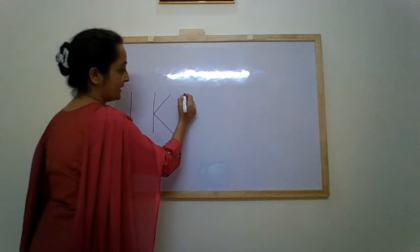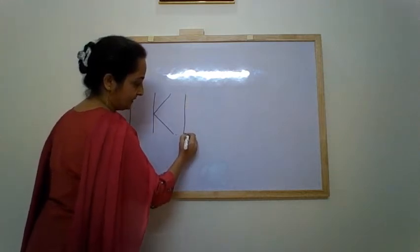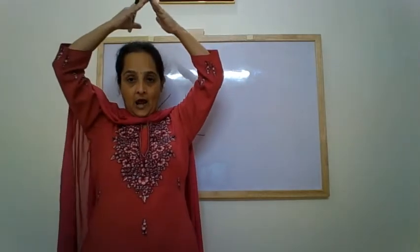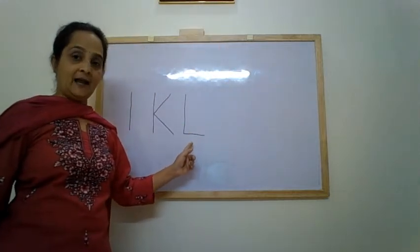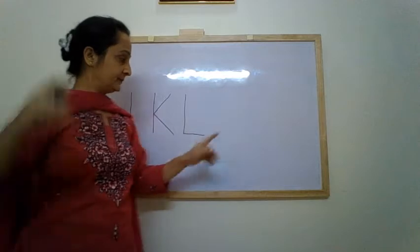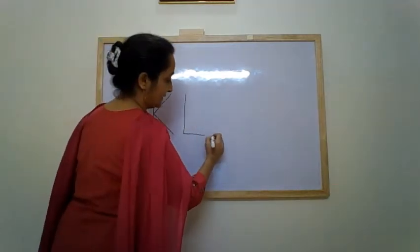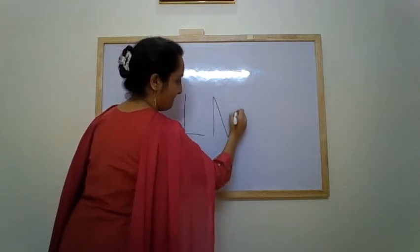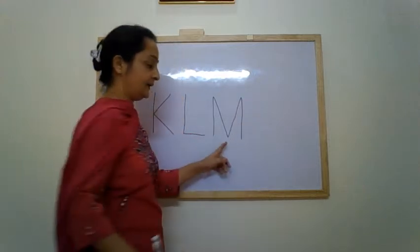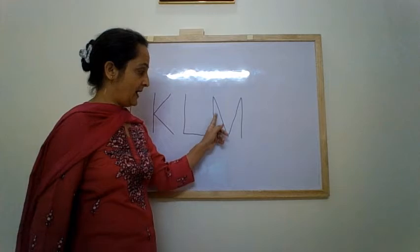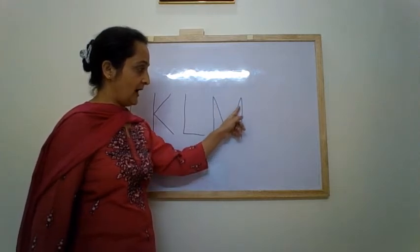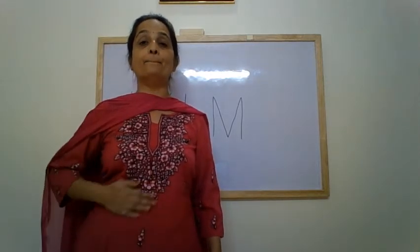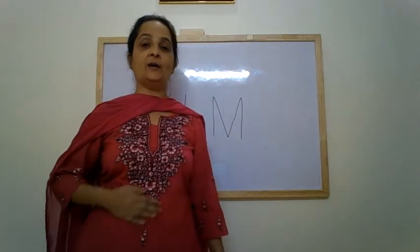Next letter is L: standing line, sleeping line down — letter L. L makes the sound L. Next letter is M: go up, come down, go up, come down — letter M. M makes the sound M.